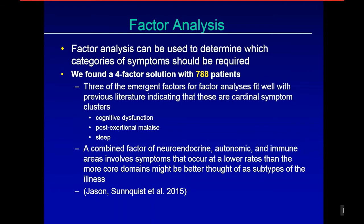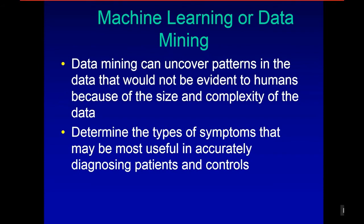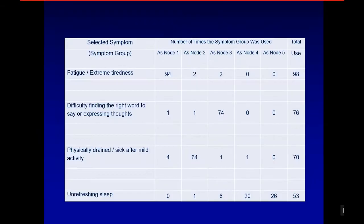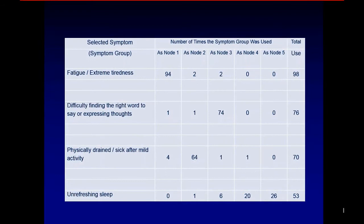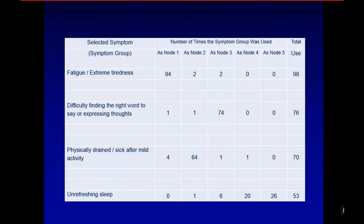Machine learning or data mining can uncover patterns in data that would not be evident to humans because of the size and complexity of the data. It can determine the types of symptoms most useful in accurately diagnosing patients versus controls. Using this approach, four symptoms came out at different nodes as potential items for a simplified diagnostic tool — and again, PEM, neurocognitive problems, sleep, and fatigue emerge as primary characteristics that differentiate patients from controls.